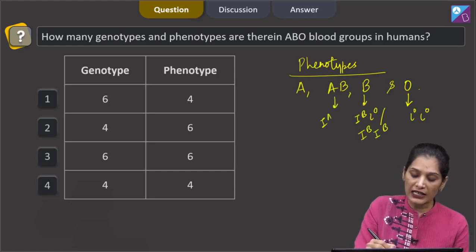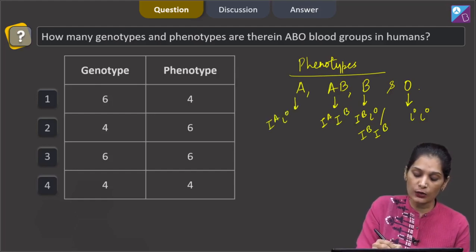For AB, it is I A I B only and for A, it is I A I O and I A I A.